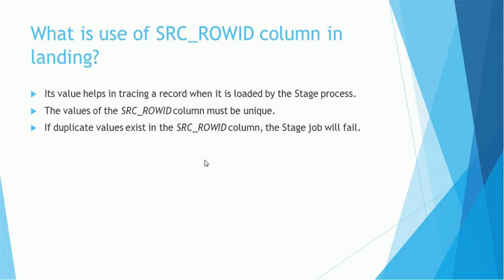The value of the source row ID column must be unique, and most of the time it is auto-generated. If you are populating this column yourself, make sure you are populating unique values. There are two ways to populate the source row ID in the landing table: either the ETL process pushes values into the source row ID column, or if the ETL process does not populate it and leaves a null value, the MDM stage job will automatically populate this value. It is an optional column but definitely helpful for tracing records. If duplicate values exist in the source row ID column, the stage job will fail — so you must fix duplicates from your end.